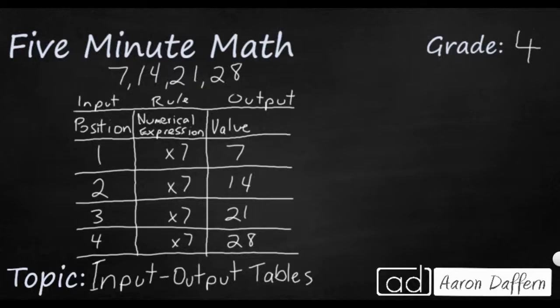So 1 times 7, 2 times 7, 3 times 7, 4 times 7. So this is what a numerical expression looks like within an input-output table. And this is how the input-output table looks in 4th grade because they'll start using some of these bigger terms like position and value.